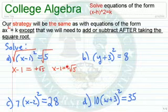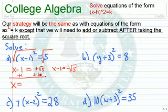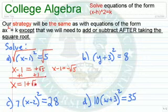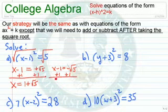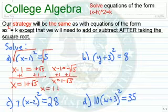Notice there are two answers here. We add 1 to both sides of each equation. The 1s cancel, and since you can't combine a number and a radical, we get x equals 1 plus the square root of 5, and over here we get x equals 1 minus the square root of 5.